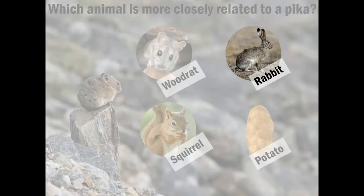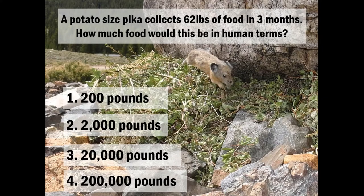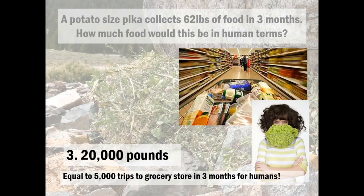The next one: if a potato-sized pika collects 62 pounds of food in three months, how much food would this be in human terms? 200 pounds, 2,000 pounds, 20,000 pounds, or 200,000 pounds? Is it 20,000? You're right, that's awesome! And this is equal to 5,000 trips to the grocery store in three months for humans, which is insane. And each of those trips, if you were to carry two to three heads of lettuce in your mouth, that would be what this tiny mammal is having to do — so it's really impressive.